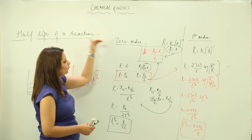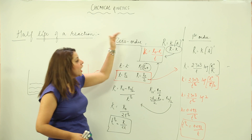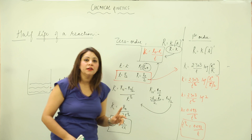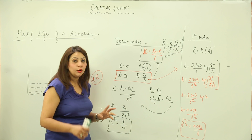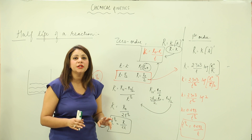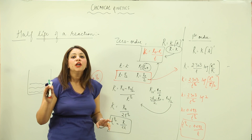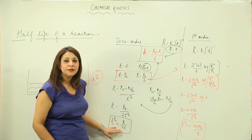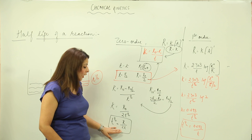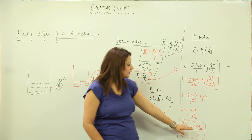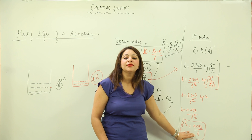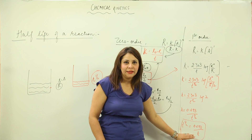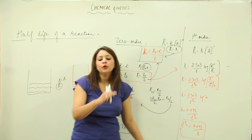Remember these expressions clearly for use in numericals: for zero order, T-half = R₀/(2K), and for first order, T-half = 0.693/K.